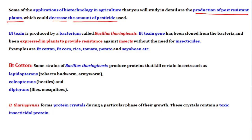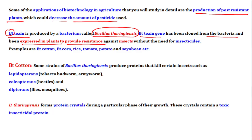Bt toxin is produced. Bt toxin is a toxic protein produced by the bacteria Bacillus thuringiensis. 'B' stands for Bacillus and 'T' stands for Thuringiensis — that is where the name Bt toxin comes from. Bacillus thuringiensis produces this insecticidal protein, and the Bt toxin gene is present in the bacteria which makes it toxic.